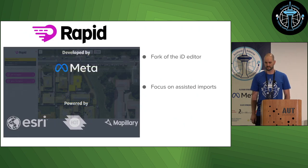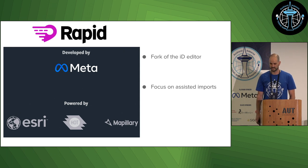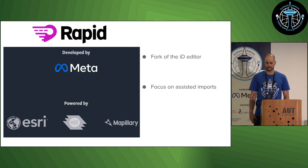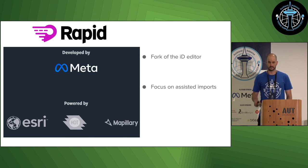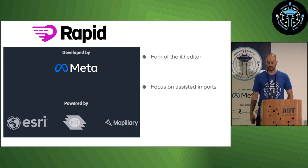The Rapid editor is developed and maintained by Meta, and ESRI act as a middleman here — they get the data from LINZ and publish it in a pipeline to be used by the Rapid editor.